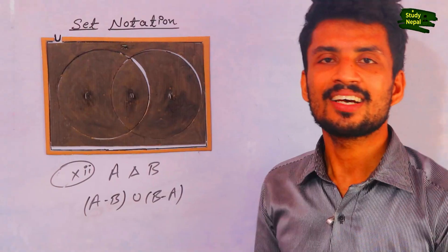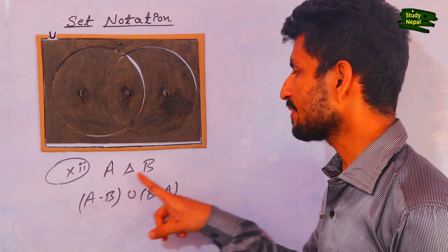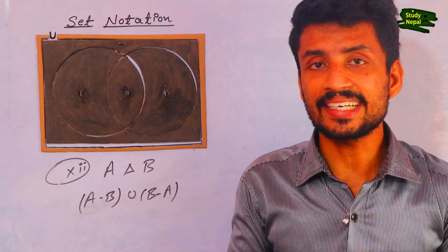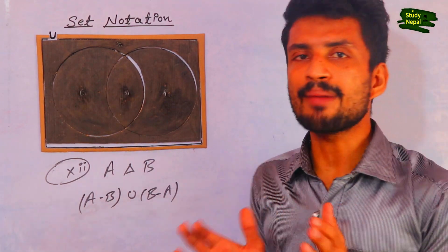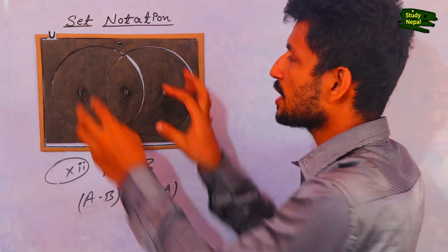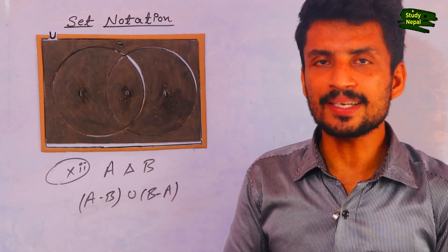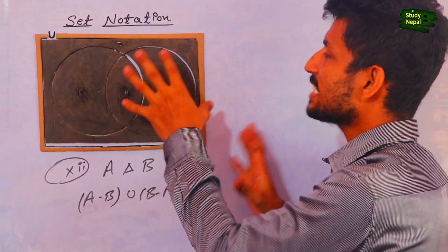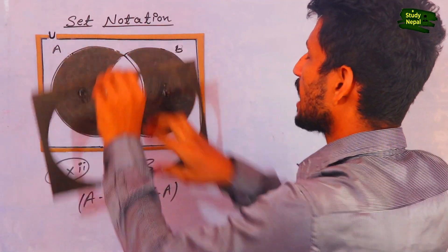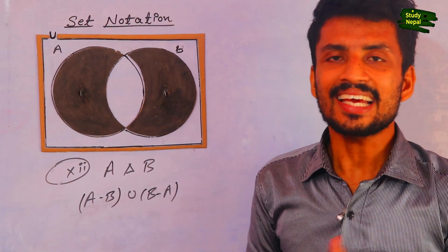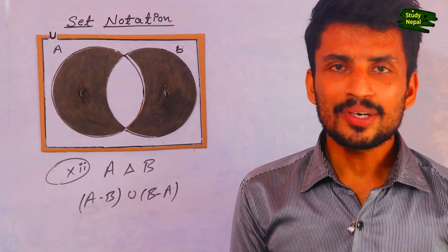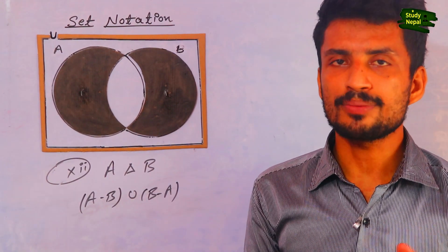Now the last topic is A symmetric difference B. The symmetric difference sign is represented by a triangular shape. Symmetric difference means the union of A minus B and B minus A. A minus B is one portion, B minus A is another portion; showing these two portions together gives the answer of A symmetric difference B. We remove the remaining parts, and what remains is A symmetric difference B.